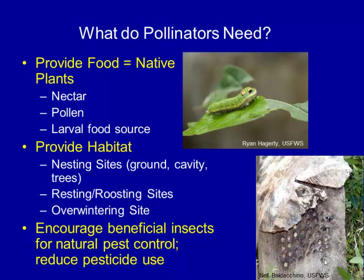This is a spicebush butterfly caterpillar — they're pretty cool caterpillars. You also want to provide habitat. They need sites for nesting; bees particularly need nesting sites. About half the bees nest in the ground and half the bees nest in wood. Resting and roosting sites are important for butterflies and birds. And then overwintering sites, which sometimes may be just near the plants in the ground, sometimes on a plant, sometimes in a wood cavity.